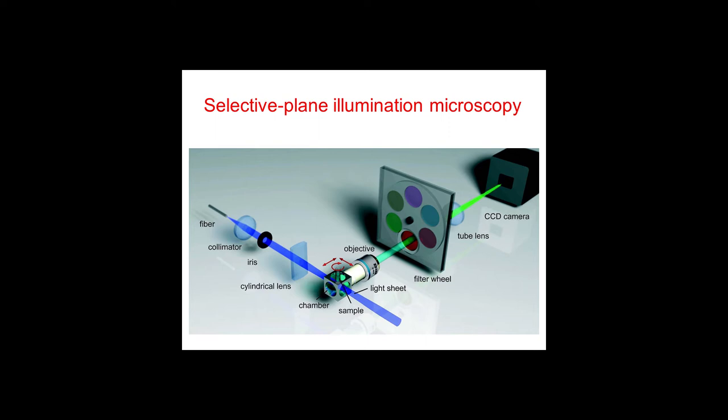So, essentially, the SPIM is a microscope where the objective is perpendicular to the light source, so essentially you have a laser that is collimated, and then you have a cylindrical lens that creates a sheet out of the laser, of the punctiform laser source. And now the sheet essentially makes an optical section through the tissue, but you are recording it at 90 degrees, that is, you are making an image of everything that is illuminated by your laser source. And this is why it's also called light sheet microscopy.